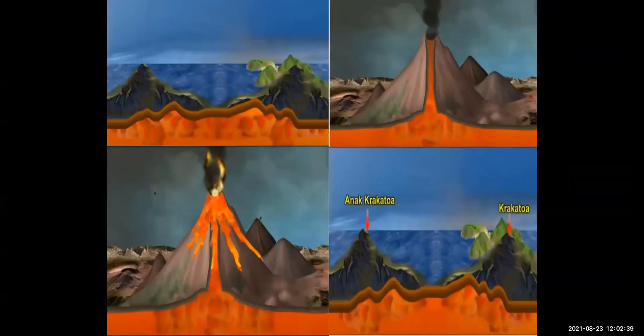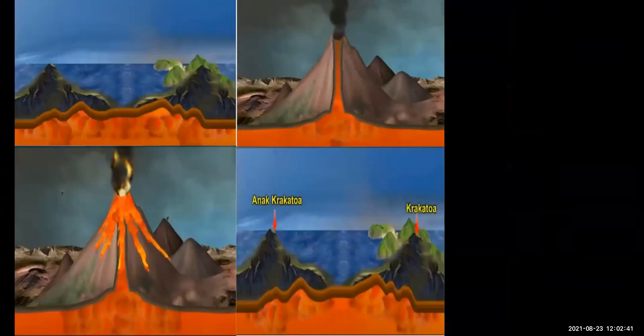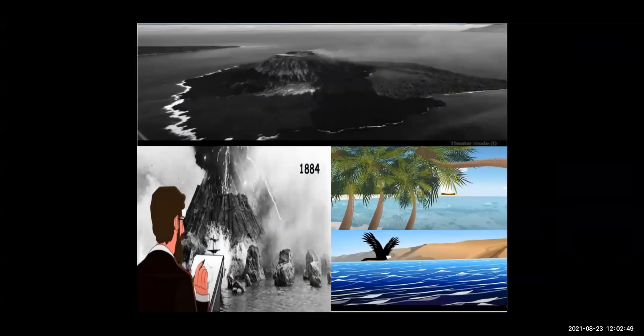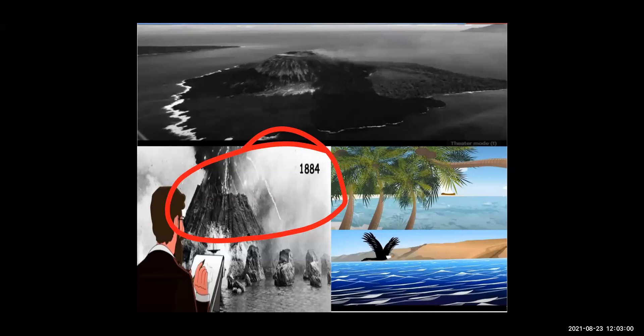After Krakatoa eruption in 1883, surrounding islands and coasts were covered with hot ashes. Even in this picture you can see the whole island, that in 1883 this volcanic eruption, the whole island got erupted with hot ash. No life remains on this island.